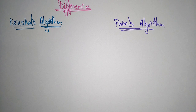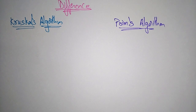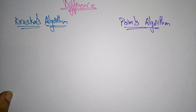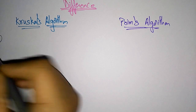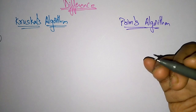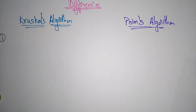Hi students. In the previous videos I explained about Kruskal's algorithm and Prim's algorithm separately. Now let us see what is the difference between Prim's and Kruskal's algorithm, with an example. I will show how Kruskal's and Prim's algorithm are implemented to find out the minimum spanning tree.